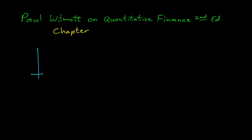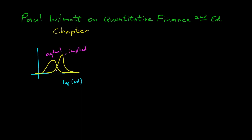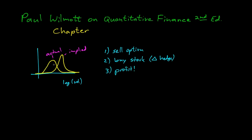Suppose you look at a stock and plot its log volatility — you get a bell curve representing the actual volatility σ. If you look at option prices and work backwards with the Black-Scholes solution, you can find the implied volatilities σ̂. Suppose those give a slightly different bell curve — the implied volatility is higher than the actual. In this case, you'd sell the option, buy the stock to delta hedge, and profit — one, two, three. You're selling something expensive and the delta hedge is cheaper than the market thinks.